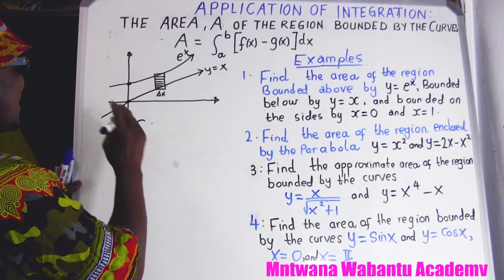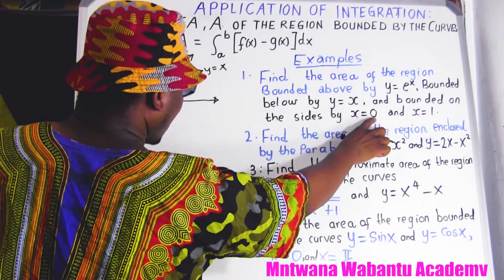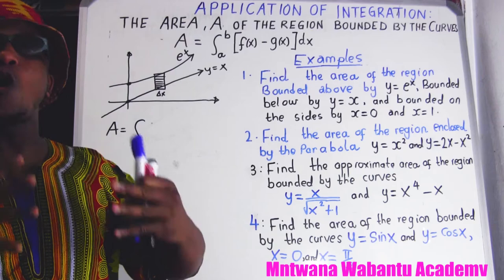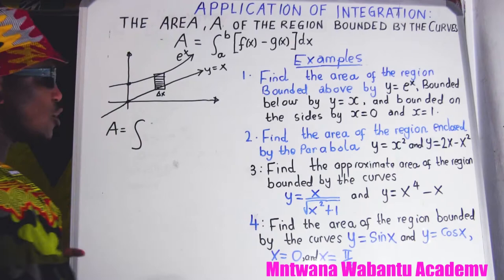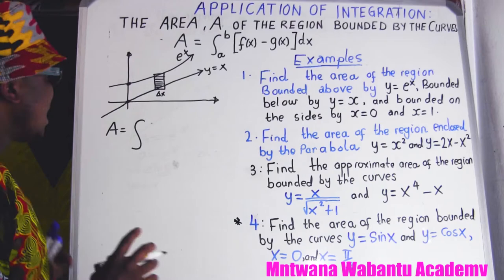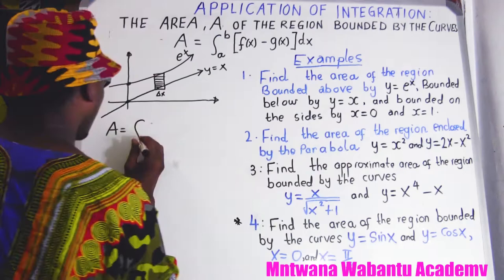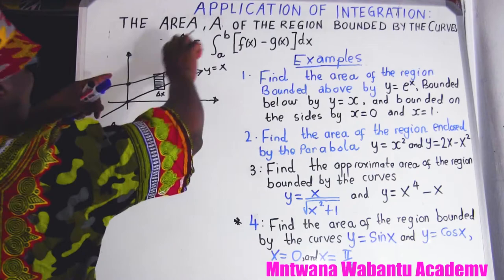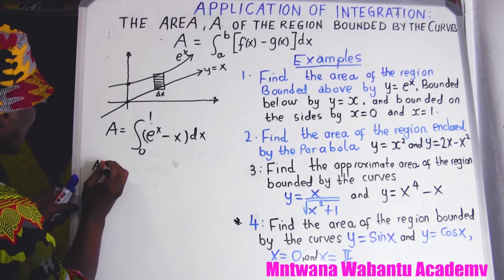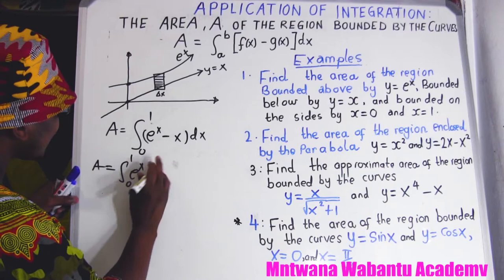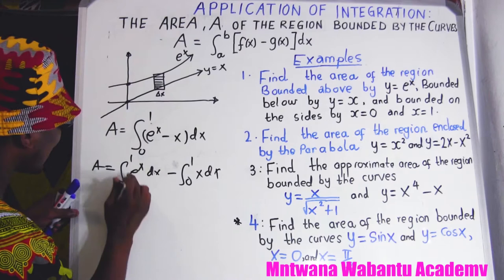The formula for the area enclosed between two graphs is the integral from where the region starts to where it ends. In this case they give us x equals zero to x equals one, because these two graphs did not intersect — that's why the limits are provided explicitly. Always take the top graph minus the lower graph. Here the top graph is eˣ and the lower graph is x.